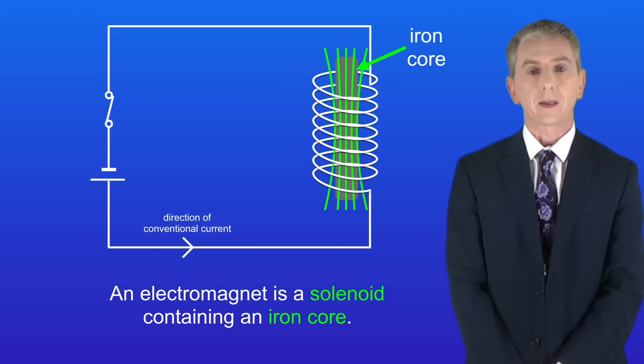In the last video we looked at electromagnets. Remember that an electromagnet is a solenoid containing an iron core.